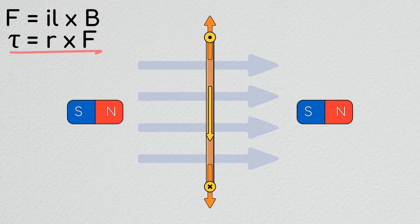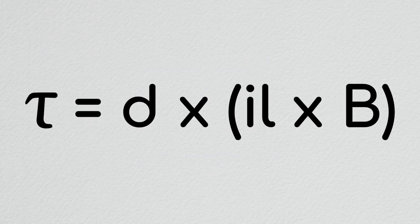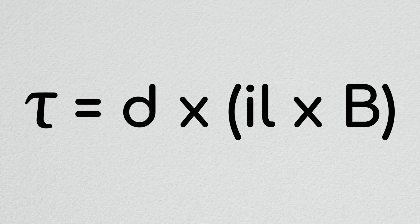Noting that torque is the cross product of distance of application with the force being applied, we can now quantify the torque on this loop of wire as the cross product of the diameter with the result of IL cross B. Now we have an equation for the torque on a current carrying loop of wire in a magnetic field.